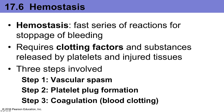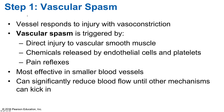Hemostasis — 'hemo' meaning blood and 'stasis' meaning staying still — is a fast series of chemical reactions for stoppage of bleeding. It requires clotting factors and substances released by platelets at the injured tissue. There are three steps: Step 1 is vascular spasm, Step 2 is platelet plug formation, and Step 3 is coagulation or blood clotting. In Step 1, the vessel responds to injury by constricting — vasoconstriction — triggered by direct injury to the vascular smooth muscle, chemicals released by endothelial cells and platelets, and reflexes from local pain receptors. This is most effective in smaller blood vessels and can significantly reduce blood flow until other mechanisms kick in.